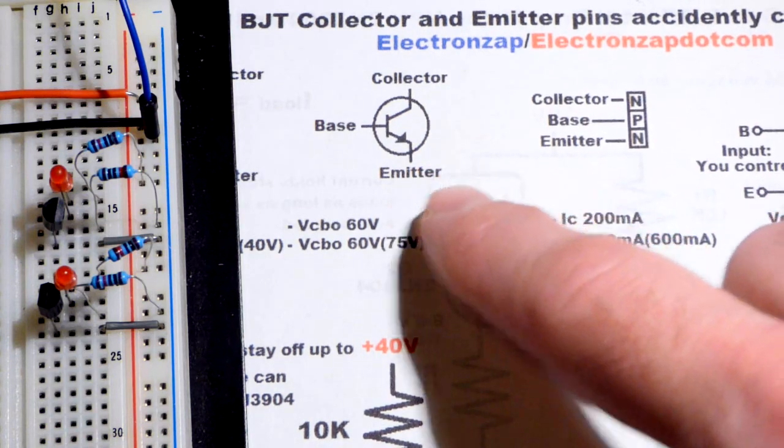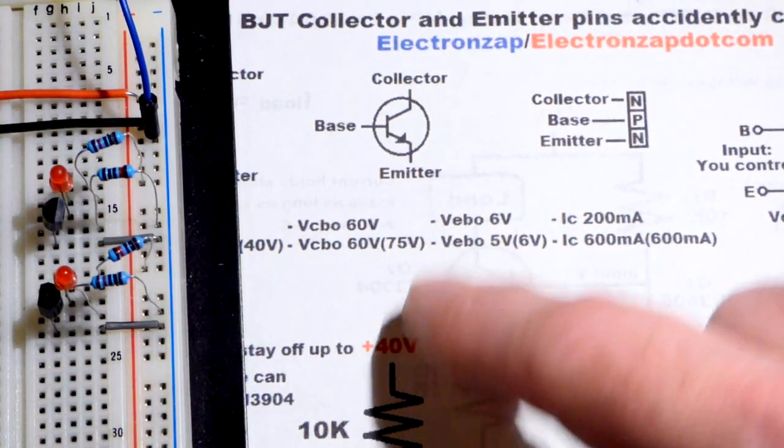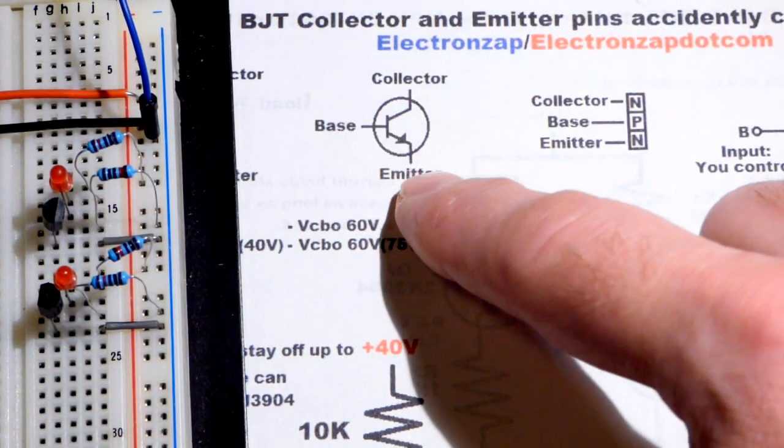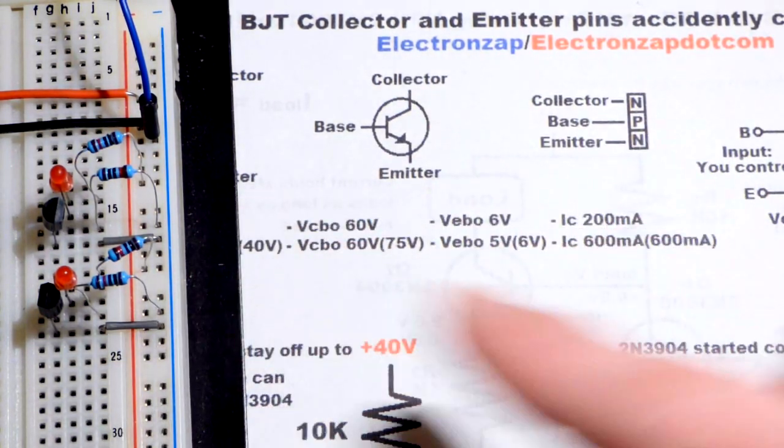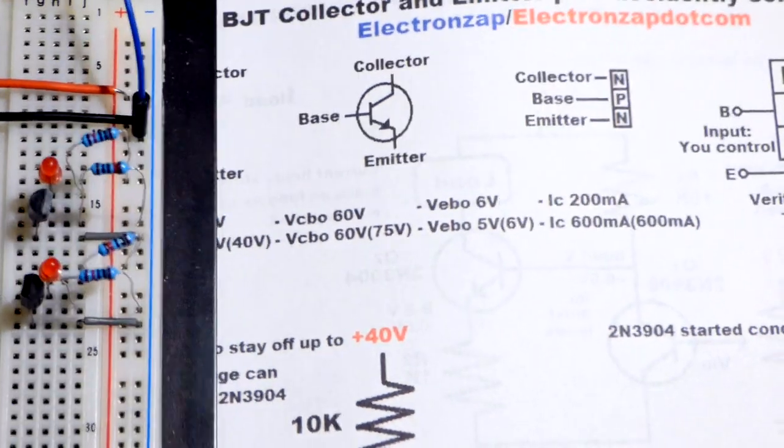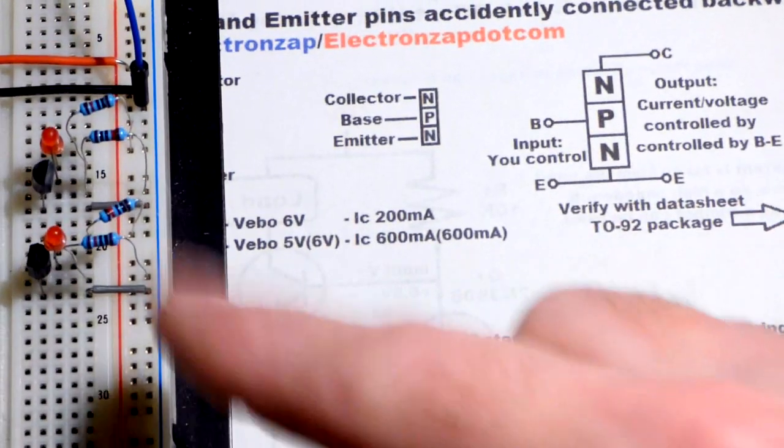So unfortunately, if you're building a circuit by a schematic and you put the collector where the emitter should be and the emitter where the collector should be, the circuit may still work and it likely will work.